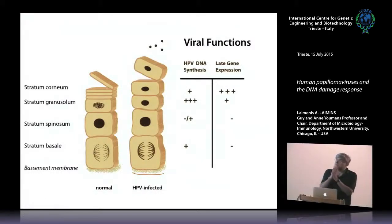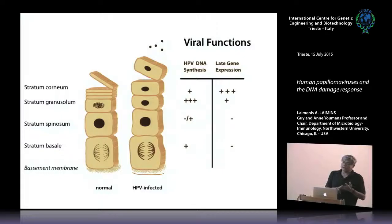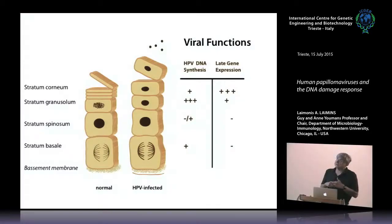These viruses infect human epithelial cells. The process that has fascinated me for the last 20 years has been the life cycle and its linkage to the differentiation program of a particular organ. Most viruses—HIV, herpes, influenza—infect a target cell and within about 72 hours are making progeny viruses from those same infected cells. HPV is one of a small group of viruses that links the production of progeny virions to the differentiation of an organ.